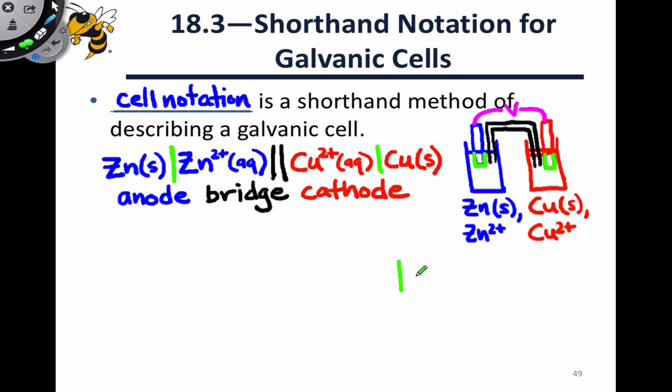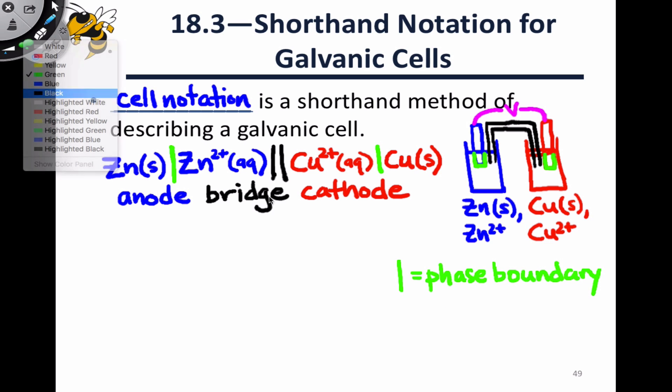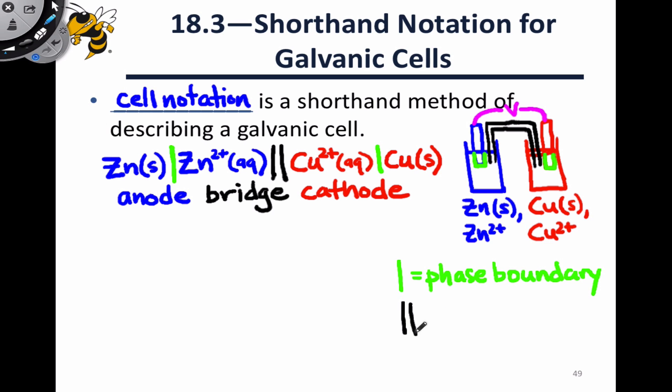So keep in mind that we use a vertical line to represent a phase boundary between two components within an electrode. And do note that there may be more than one phase boundary within an electrode. For example, if an inert electrode is used and the redox reaction, the half reaction, takes place completely in aqueous solution. And the salt bridge is always represented with two adjacent vertical lines, like so.